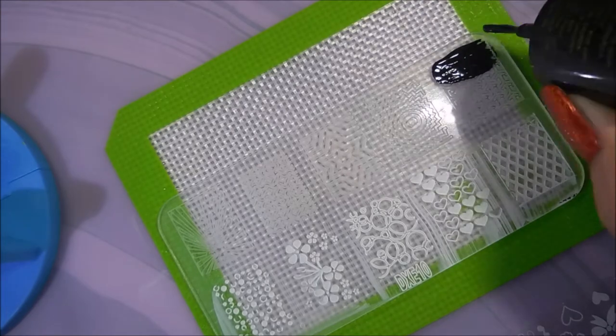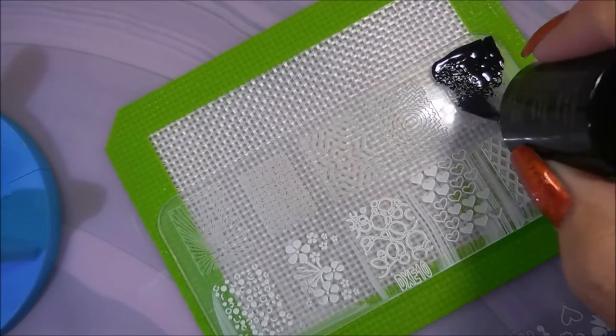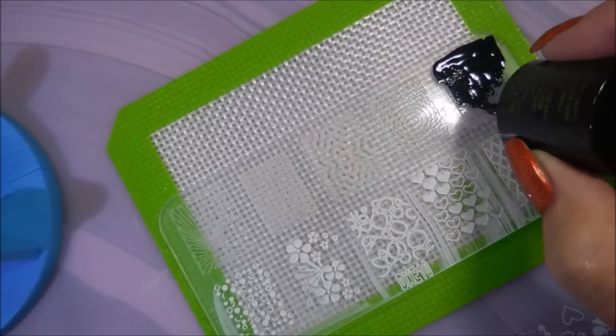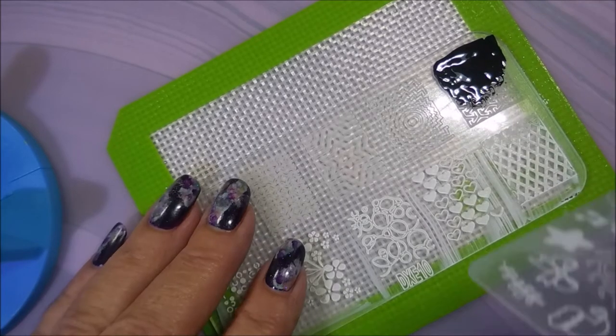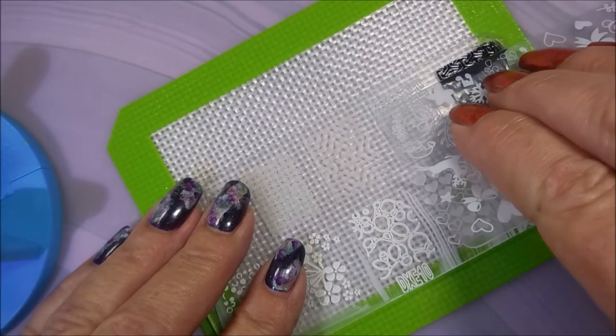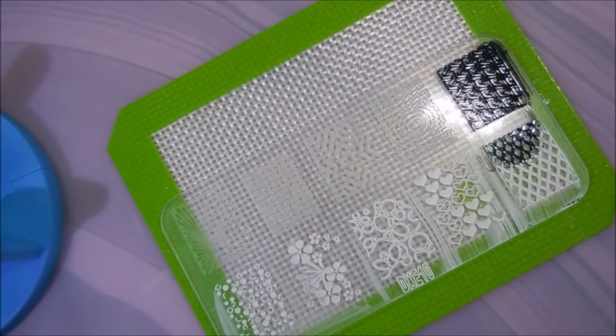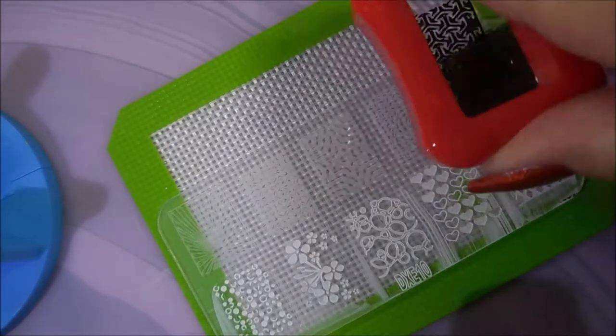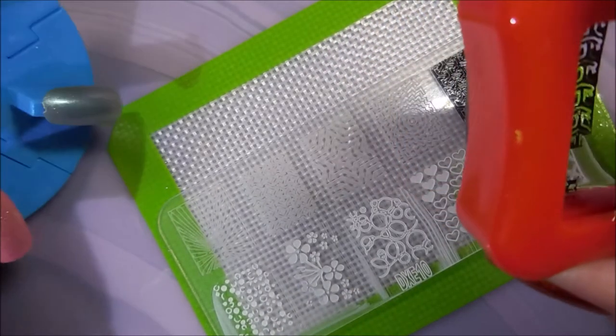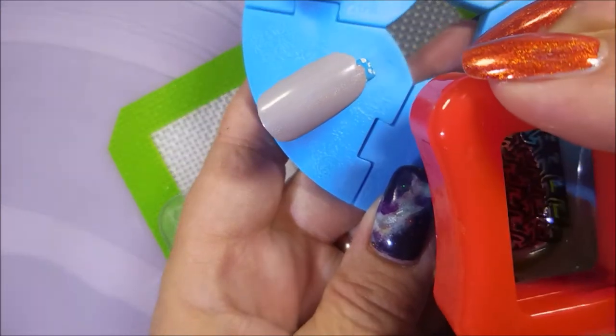And now onto the top row and the black stamping polish. Oh, I fibbed earlier. I'm not using my other nail thingies. I'm just using just that little nail wheel today. And I really like this image too.